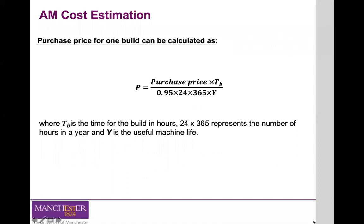The final component of the cost per batch is the purchase price allocated to that specific build. This is the cost of your machine — the amount of money paid to purchase it — multiplied by the time required to build that batch of parts, divided by 0.95, which means the machine operates 95% of the time, 24 hours per day, 365 days per year, multiplied by the useful life of the machine. The useful life will always be given to you.